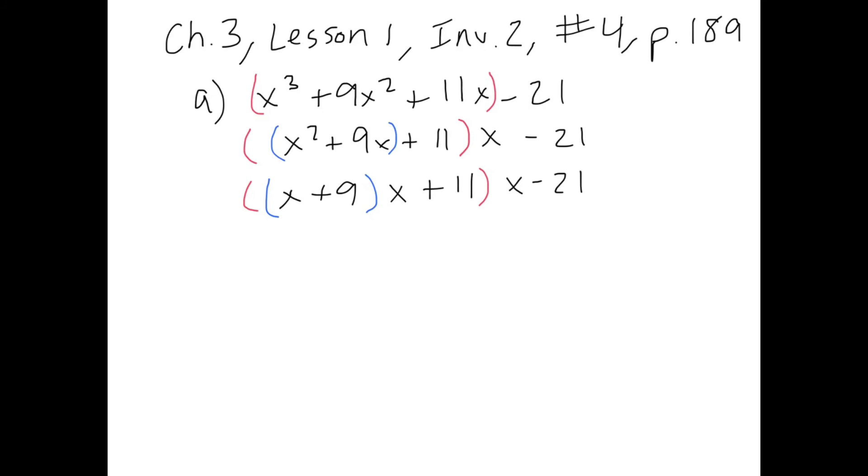If you did everything correctly, you should have come up with a polynomial in nested form that looks like x plus 9, that quantity times x, plus 11, that full quantity times x, minus 21.